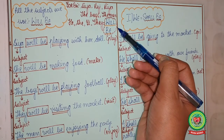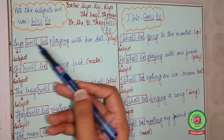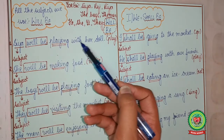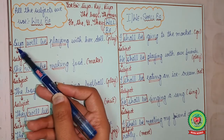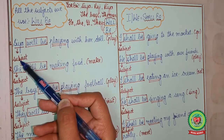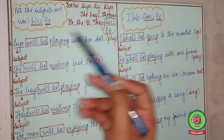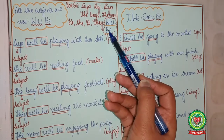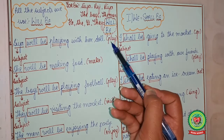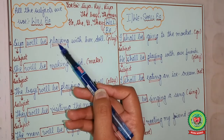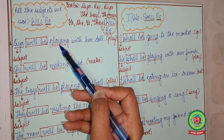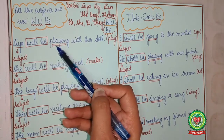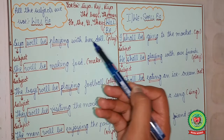Let us see a few examples. Sia dash with her doll, and the verb is play. Who? Sia — so subject. With Sia we will use will be. Play will change to present form of verb plus ing, that is playing. So the answer is: Sia will be playing with her doll.